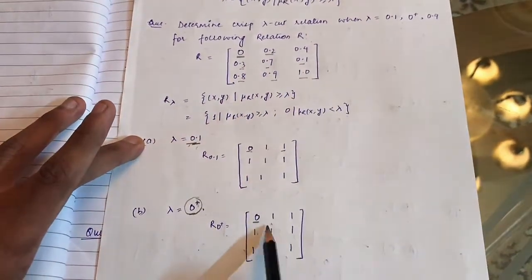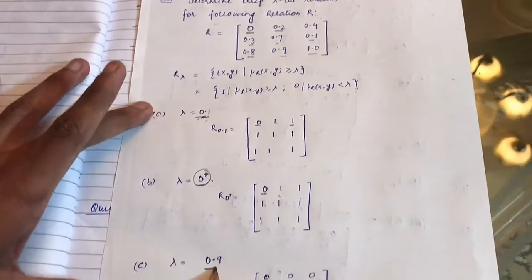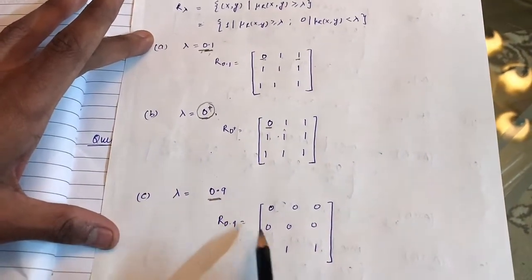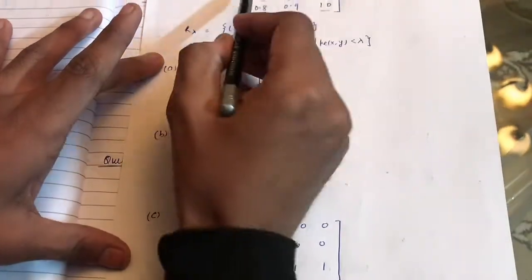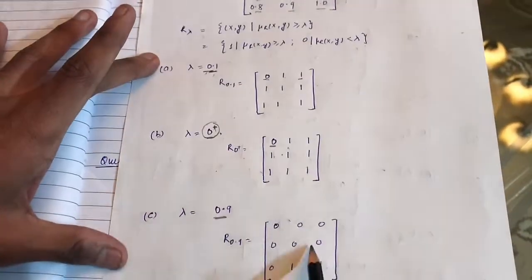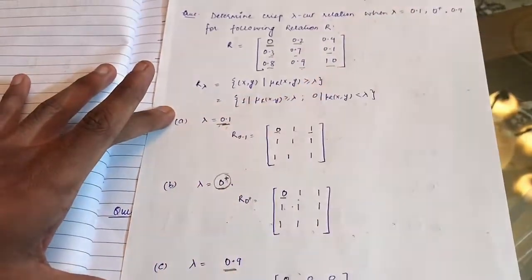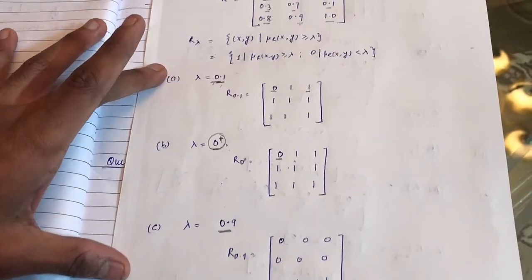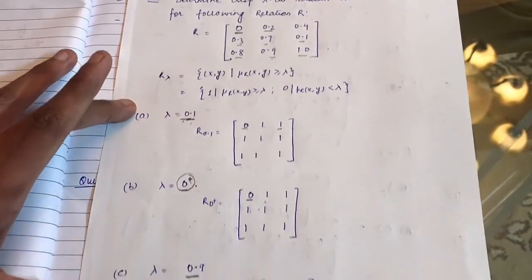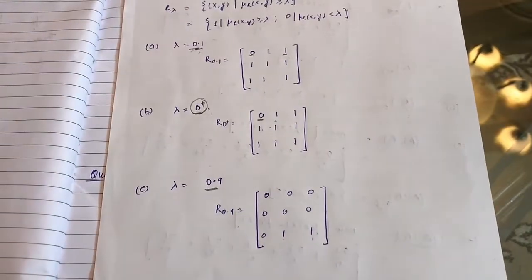Similarly you can do it for 0.9 yourself. For example, all the values less than 0.9 we have made them 0, and 0.9 and 1 we have made them as 1. Friends, if you like the video, please like, subscribe, and share. Thank you.